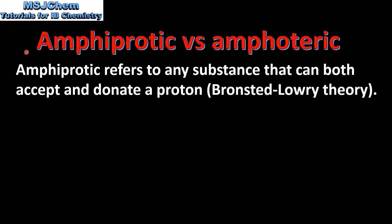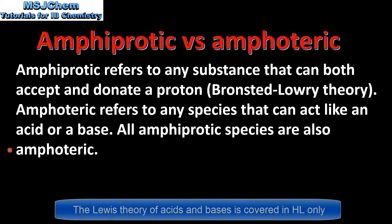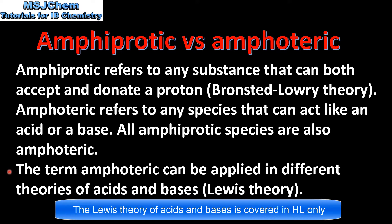Finally, I'd like to look at the difference between amphiprotic and amphoteric. Amphiprotic refers to any substance that can accept and donate a proton in the Brønsted-Lowry theory of acids and bases. Amphoteric refers to any species that can act like an acid or a base. All amphiprotic species are also amphoteric. The term amphoteric can be applied in different theories of acids and bases, such as Lewis theory, where there is no proton transfer.